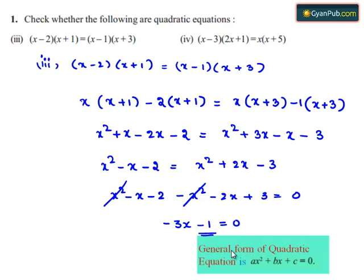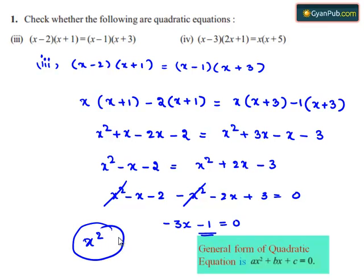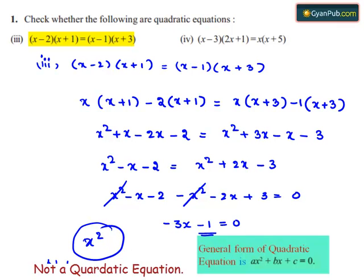We know that the general form of a quadratic equation is ax squared plus bx plus c equals 0. But if we notice, the final equation is minus 3x minus 1 equals 0. We do not have any x squared term. So x squared is missing in this equation. Therefore, the given equation is not a quadratic equation.